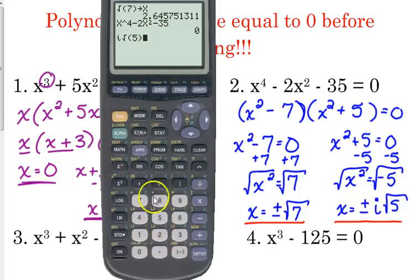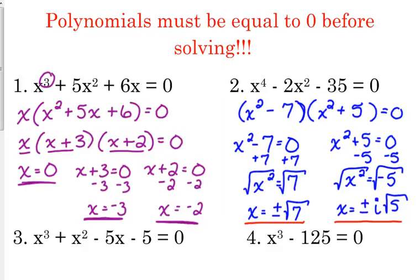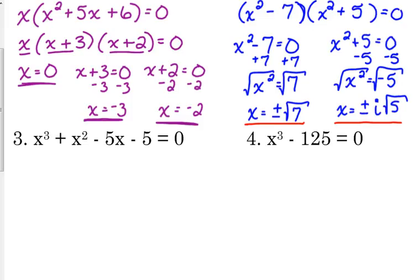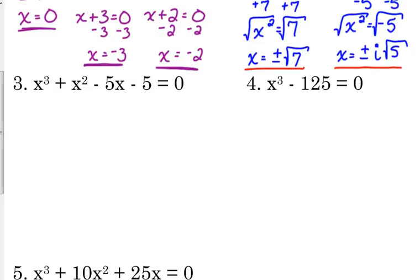i square root of 5, store that as your x. So, remember the trick so you don't have to type it all in. Second, enter. Second, enter. And it also gives us zero. Okay, so those are our four solutions there. So, number three. X cubed plus X squared minus 5x minus 5 is equal to 0.